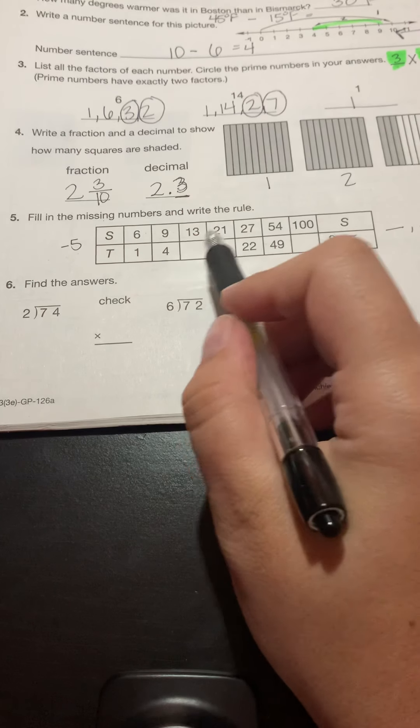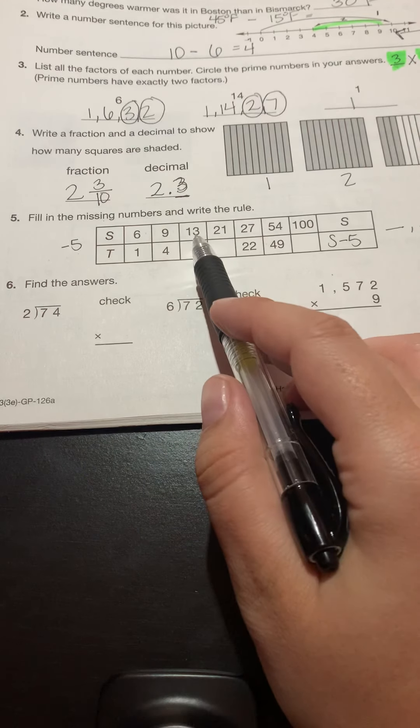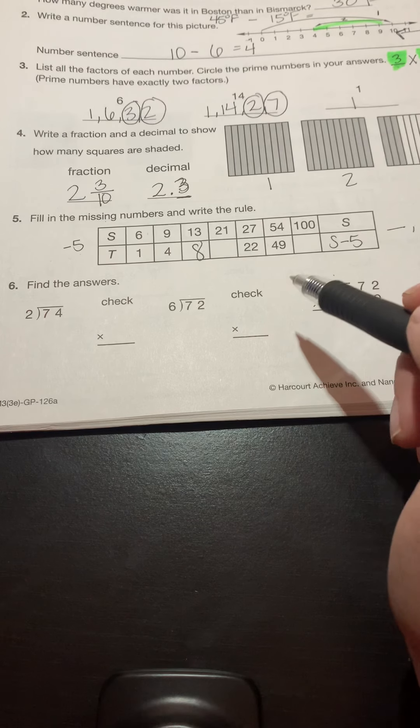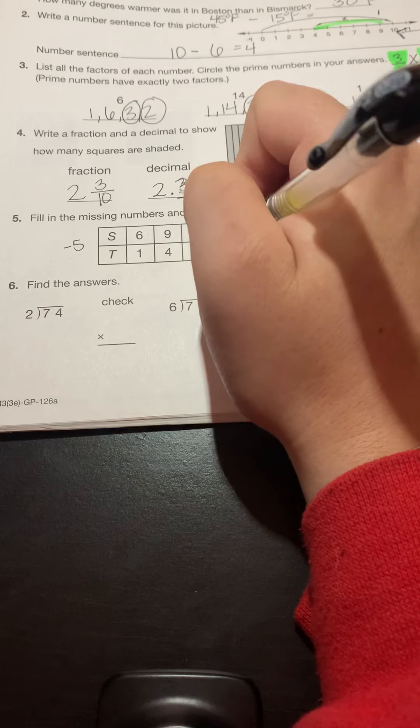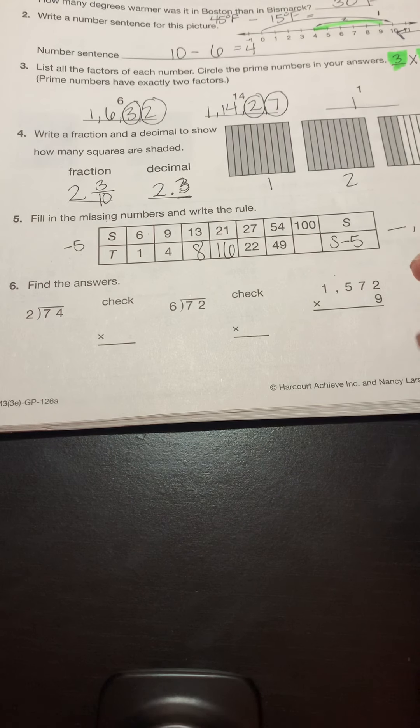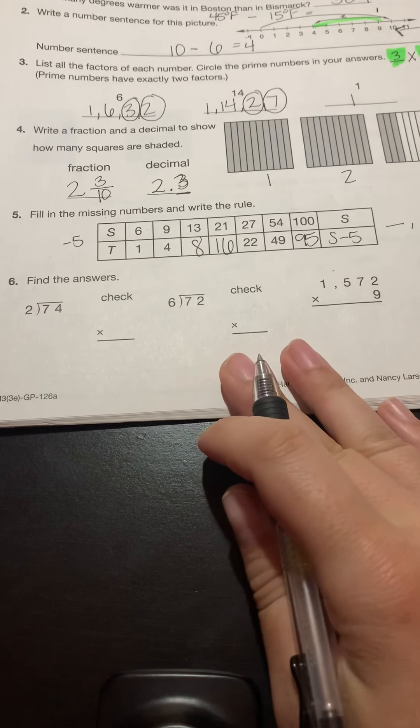So now to figure these numbers out, what should I do? Just subtract five from each of them. So what's 13 minus five? Eight. What's 21 minus five? 16. And then how about 100 minus five? 95. Nice job.